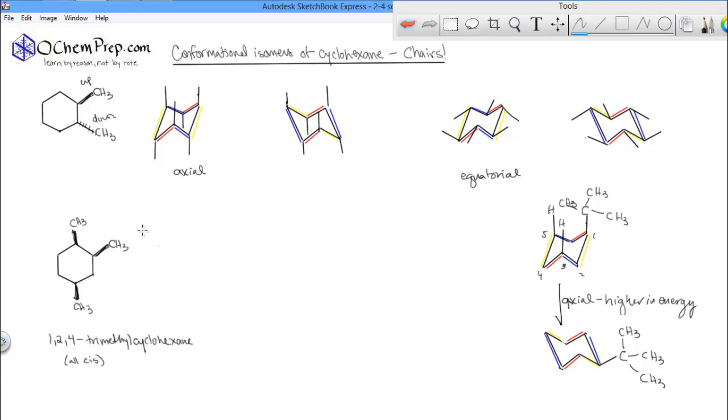Let's do a problem and look at conformational isomers of cyclohexane. I'm going to take this 1,2,4-trimethylcyclohexane, where the methyls are all cis to each other,